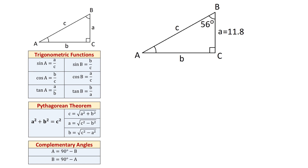Below we have the Pythagorean theorem: A squared plus B squared equals C squared. If we are given two of the sides in a right triangle, we can find the missing side using one of these three formulas. The hypotenuse C equals the square root of A squared plus B squared. Side A equals the square root of C squared minus B squared. And side B equals the square root of C squared minus A squared.